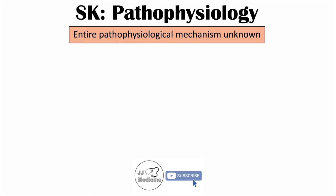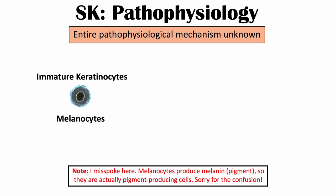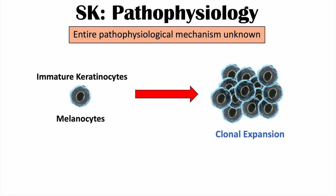Now let's talk about some of the proposed mechanisms as to why these skin lesions form. It's important to note that the entire pathophysiological mechanism is unknown, but what is known is that immature keratinocytes and melanocytes — which are pigmented cells — undergo clonal expansion, meaning those skin cells multiply to form the skin lesions. It's believed that genetics is involved, as well as fibroblast growth factor receptor 3 (FGFR3), where a change in FGFR3 may lead to clonal expansion of these cells.